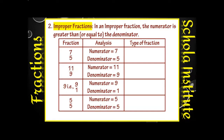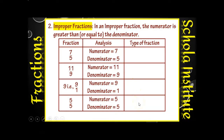Second is improper fractions. In an improper fraction, the numerator is greater than or equal to the denominator। कभी-कभार numerator और denominator same होंगे — उपर वाला नंबर और नीचे वाला नंबर अगर same हो तो वो भी improper fraction कहलाएगा। Otherwise अगर numerator denominator से बड़ा हो तो उस fraction को हम बुलेंगे improper fraction।